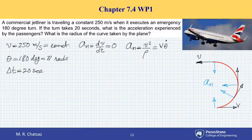Therefore, V squared, which is 250 squared, divided by rho equals to V theta dot. I can write 250 over rho equals to theta dot, which is pi divided by 20 seconds. Solving this equation for rho, we have 20 times 250 divided by pi.